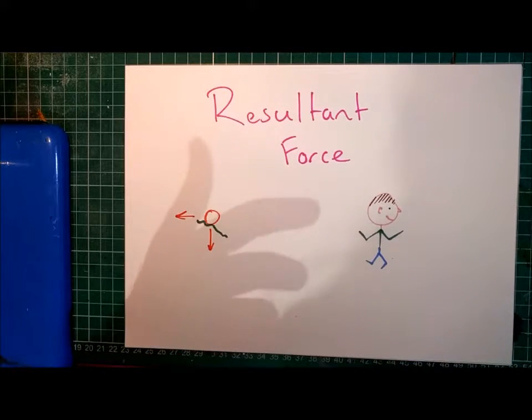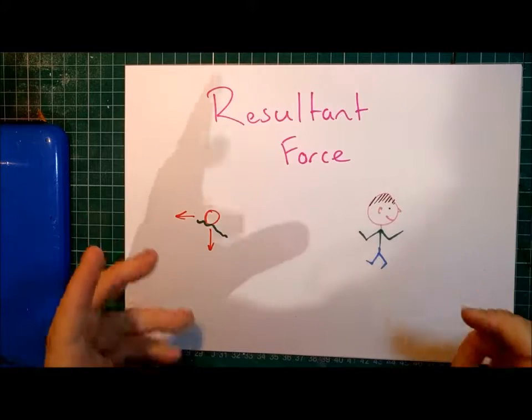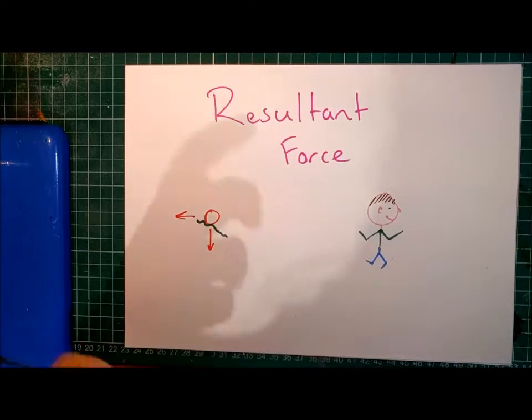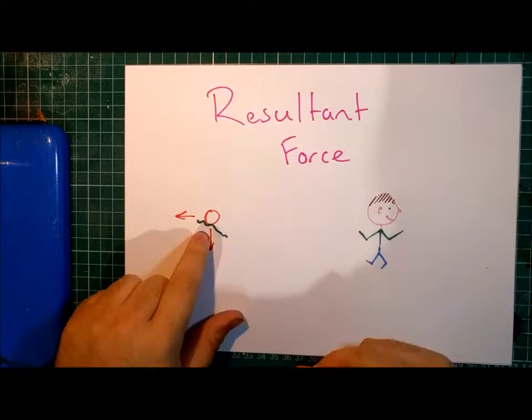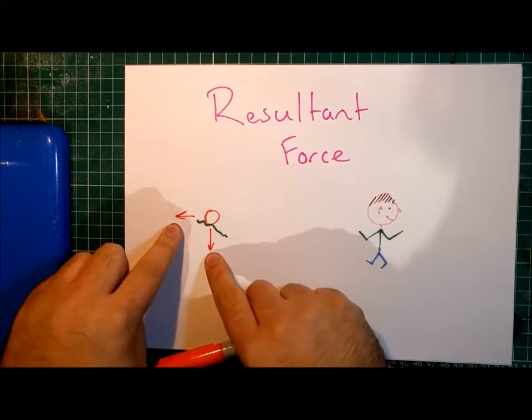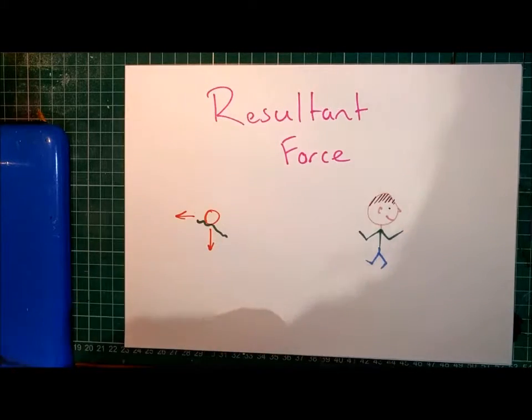Resultant forces are essentially a single force which has the same effect as all of the original forces acting on an object altogether. If we're talking about this ball here, then a resultant force would be a single force arrow that has the same effect as these two forces acting on the ball at the same time.